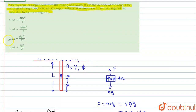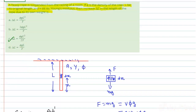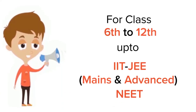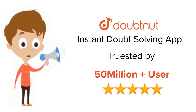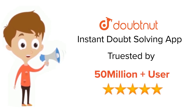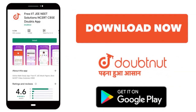So delta-L equals φgL²/2Y. According to the options, option C — phi·g·L² divided by 2Y — is the correct answer. Hope this answers your question. Thank you. For class 6 to 12, IIT-JEE and NEET level, trusted by more than 5 crore students. Download the DoubtNut app today.